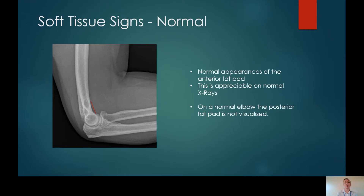This is an example of the normal appearances of the anterior fat pad. It is normal to be able to appreciate this on a lateral elbow and is not indicative of a fracture. It can be more prominent on some people compared to others — however, that's normal for them. It is never normal to see the posterior fat pad, and if you can see this, this is indicative of a fracture.